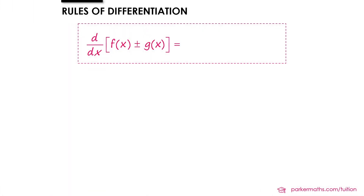The second rule is useful when we want to find the derivative of two separate terms or a group of terms. In this case all we need to do is differentiate each term separately. So where we're doing the derivative of f(x) plus or minus g(x), we could first differentiate f(x) and then separately differentiate g(x) and then add or subtract them depending on what we're doing.